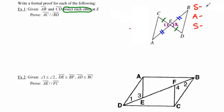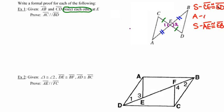My first pair of sides will be CE and ED, my second pair of sides will be AE and EB, and my pair of angles will be those vertical angles at point E.